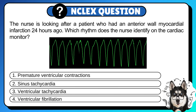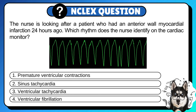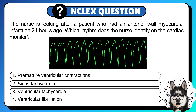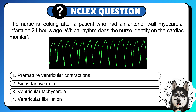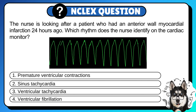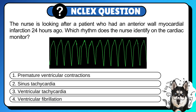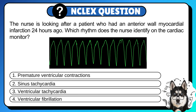1. Premature ventricular contractions. 2. Sinus tachycardia. 3. Ventricular tachycardia. Or 4. Ventricular fibrillation. Pause the video, comment your answer, and press play to see the correct choice.